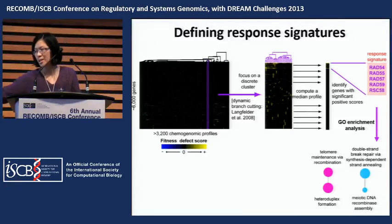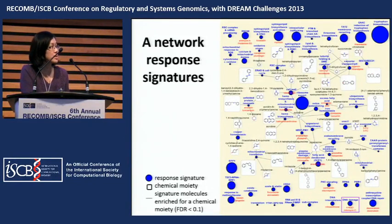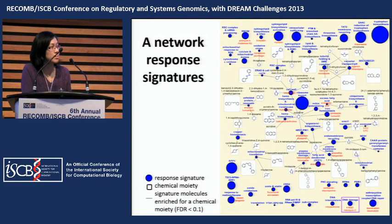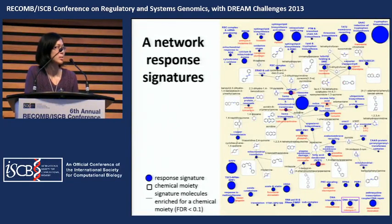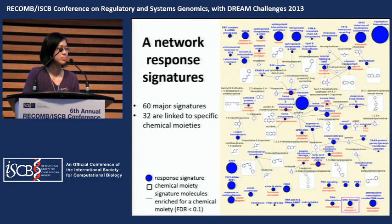We identified 60 major response signatures shown in this network. Each blue node is a response signature, and we connect it to chemical moiety nodes (the white ones) if the compounds inducing that signature are enriched for specific chemical moieties. For example, the uracil transport signature is linked to the uracil chemical moiety as expected. In total, 32 signatures are linked to specific chemical moieties — around half.